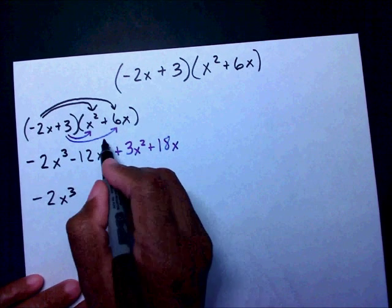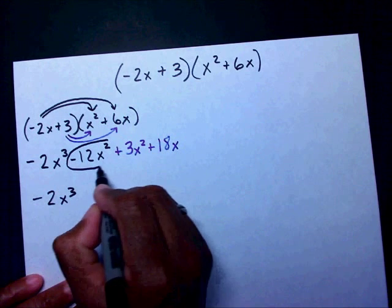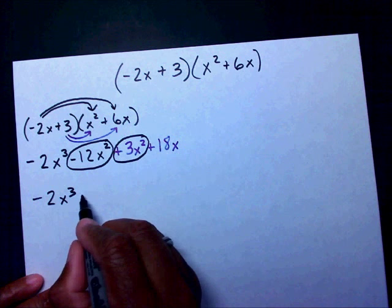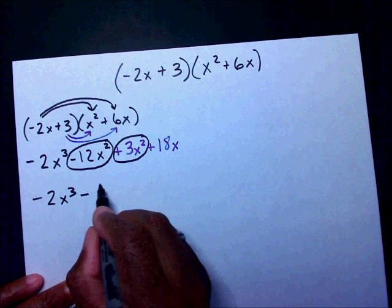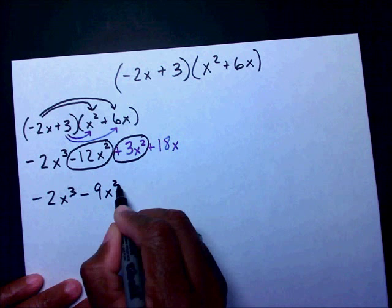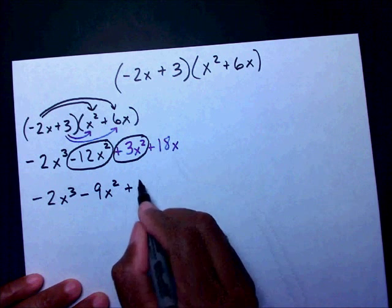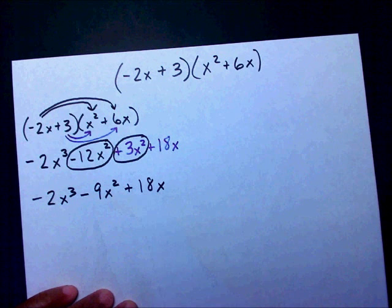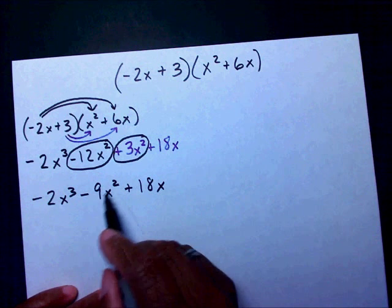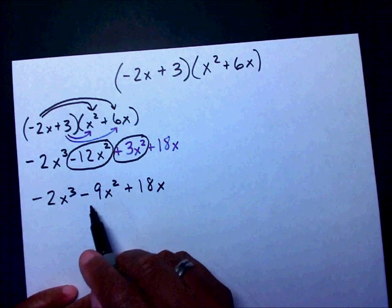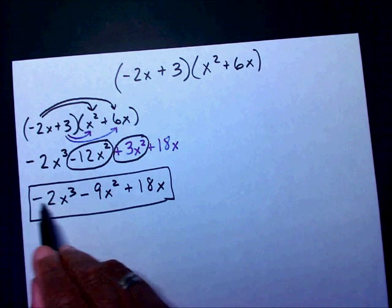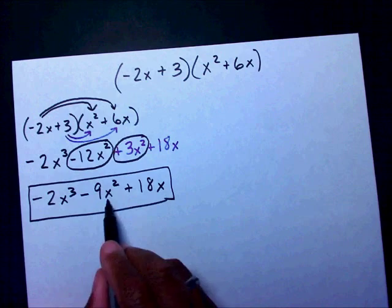Then I multiply 3 times x squared, which is plus 3x squared. And 3 times 6x, which is positive 18x. Now combining like terms: negative 2x cubed stays. Negative 12x squared plus 3x squared gives negative 9x squared. So my final answer is negative 2x cubed minus 9x squared plus 18x.